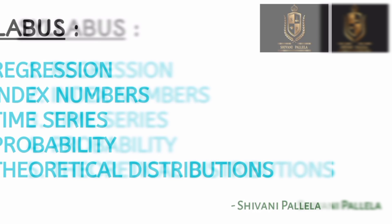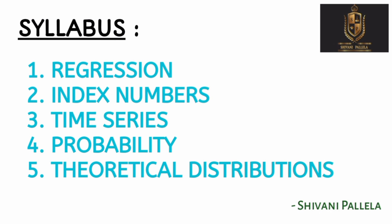The syllabus has five units. The first chapter is Regression, second is Index Numbers, third is Time Series, fourth is Probability, and fifth is Theoretical Distributions. These five units cover both problematic as well as theory.